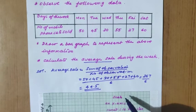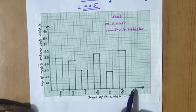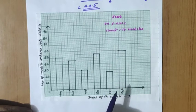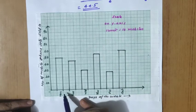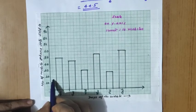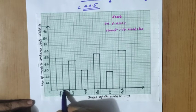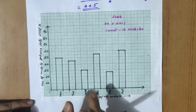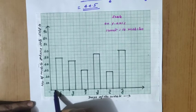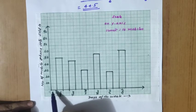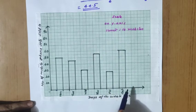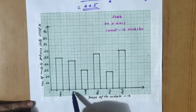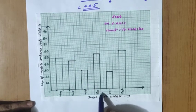Now let us look at the bar graph. When drawing bars, equal spacing is important - one centimeter gap at the beginning and one centimeter between each bar throughout. A common mistake is taking two centimeters at the start and one centimeter between bars - that is wrong. The spacing must be uniform everywhere.